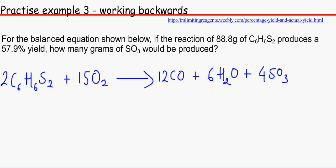For the balanced equation shown below, if the reaction of 88.8 grams of C6H6S2 produces a 57.9% yield, how many grams of SO3 would be produced? Please have a go at this and pause the video and play it when you feel ready to.